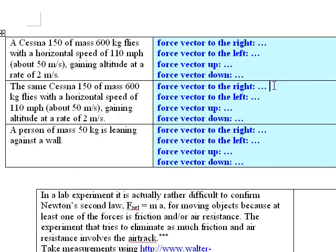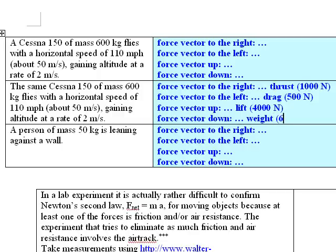To the right there was the thrust at one thousand Newtons. Drag or air resistance at 500 Newtons. This one here was the lift at four thousand Newtons, and this one is of course the weight at six thousand Newtons.